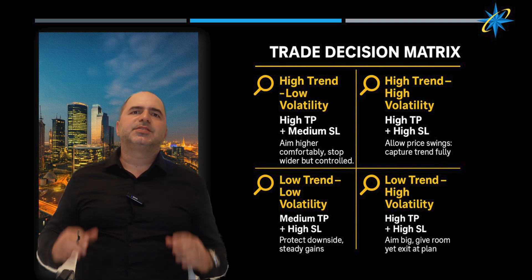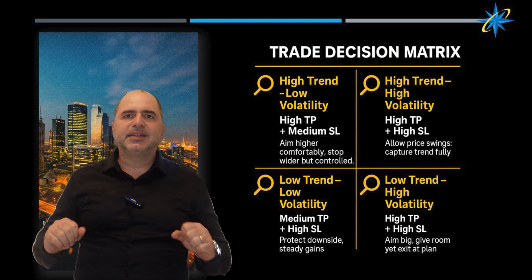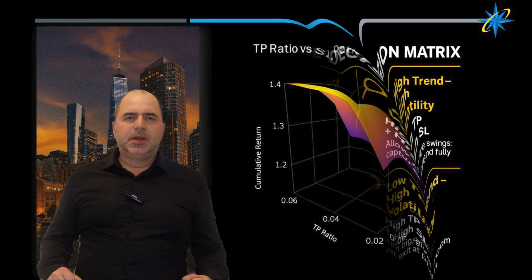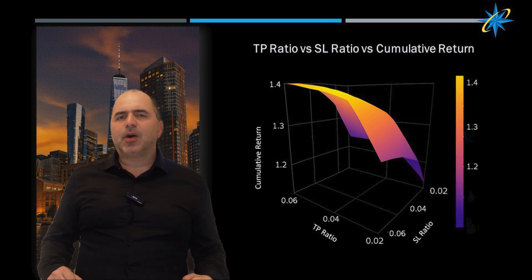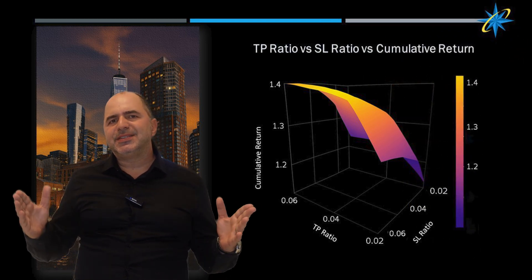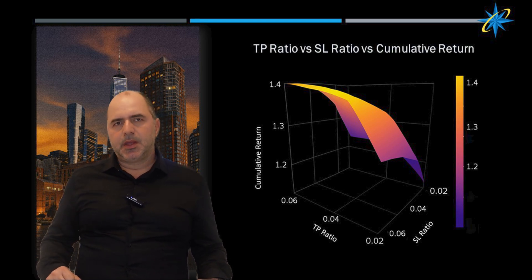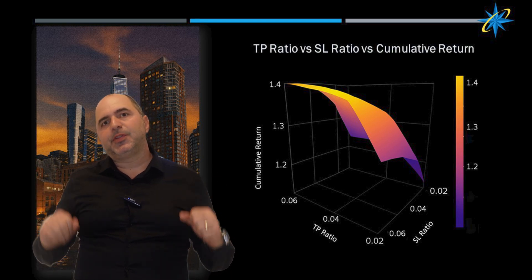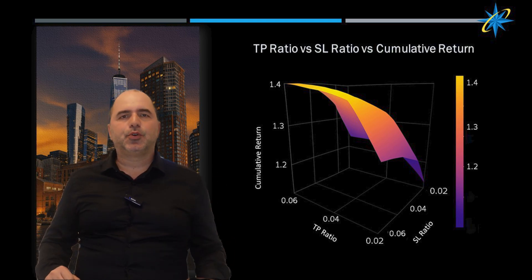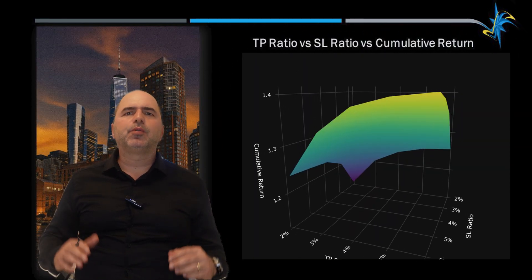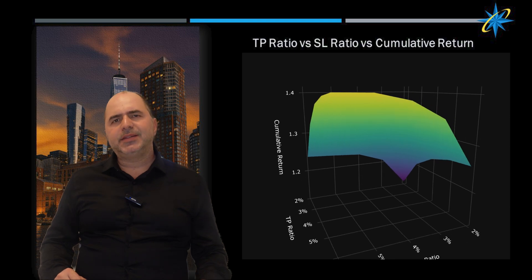This is a structured and statistically validated way to guide your exit strategy. This 3D plot packs thousands of intraday trades into a single snapshot. What does it tell us? Big profit targets win — a take profit of about 6% delivers the strongest returns in every market regime.